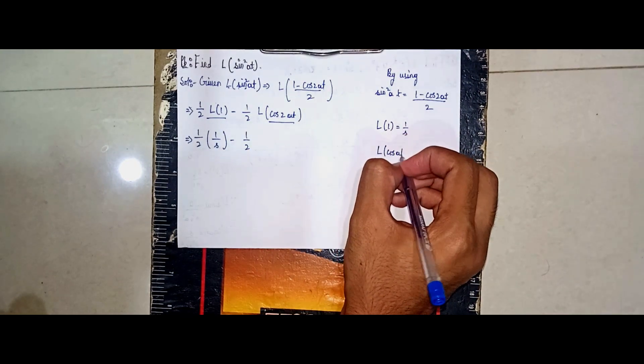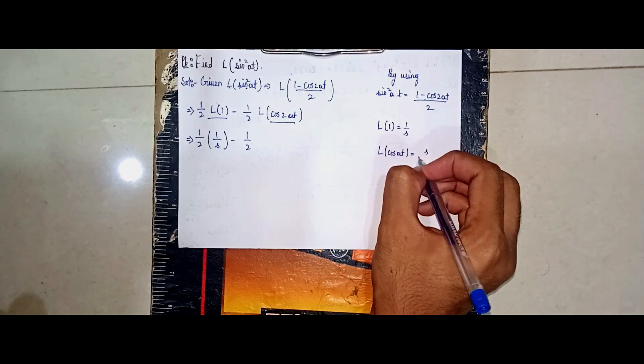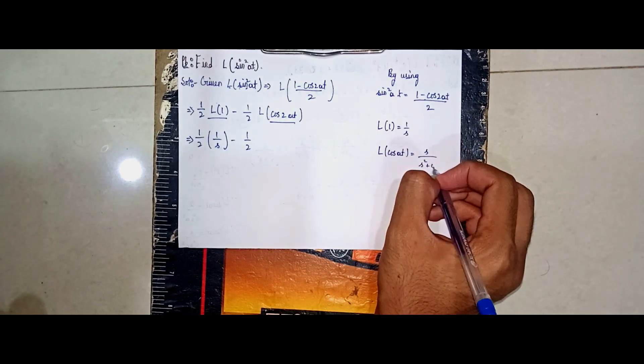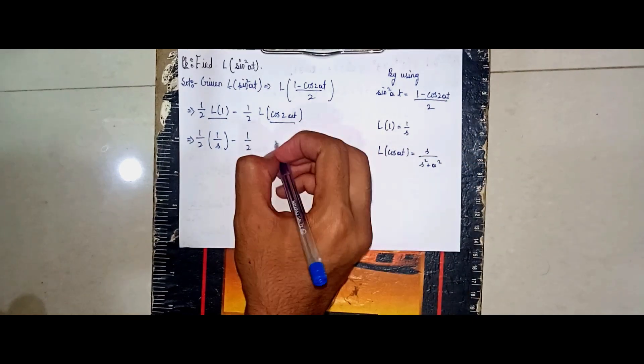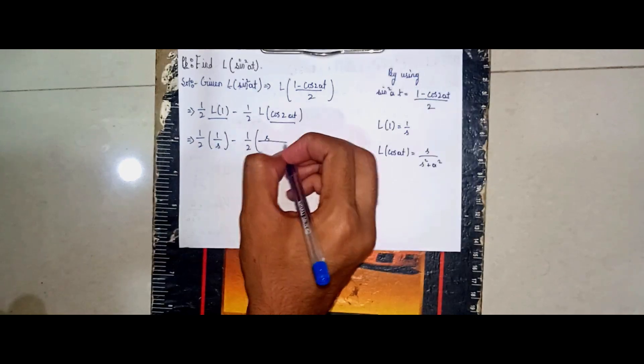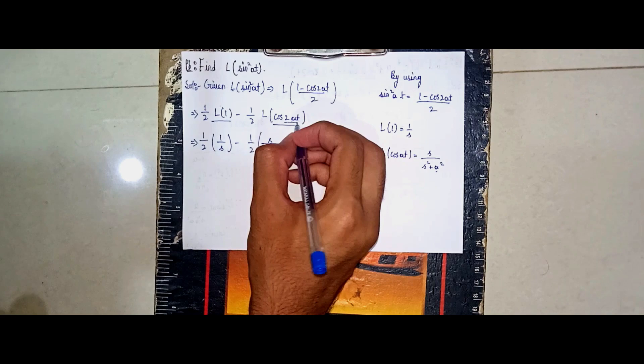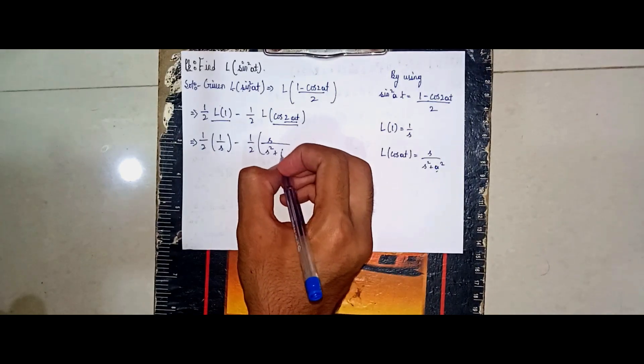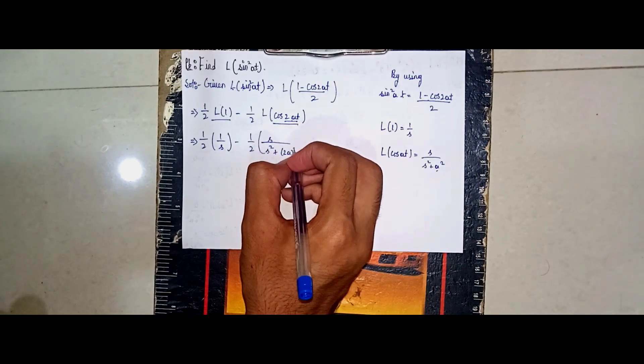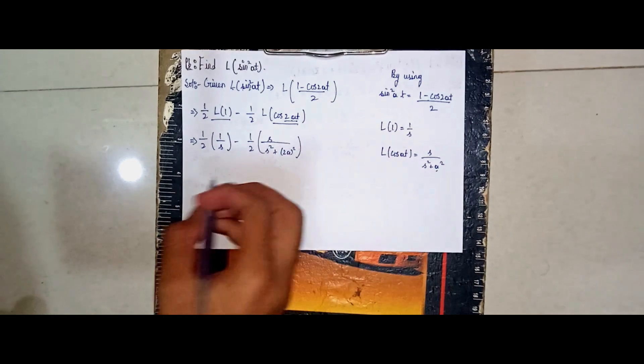cos at equals s divided by (s squared plus a squared). Here, a is 16 (which is 2·8), so it becomes s divided by (s squared plus 16 squared), which is s squared plus a squared.